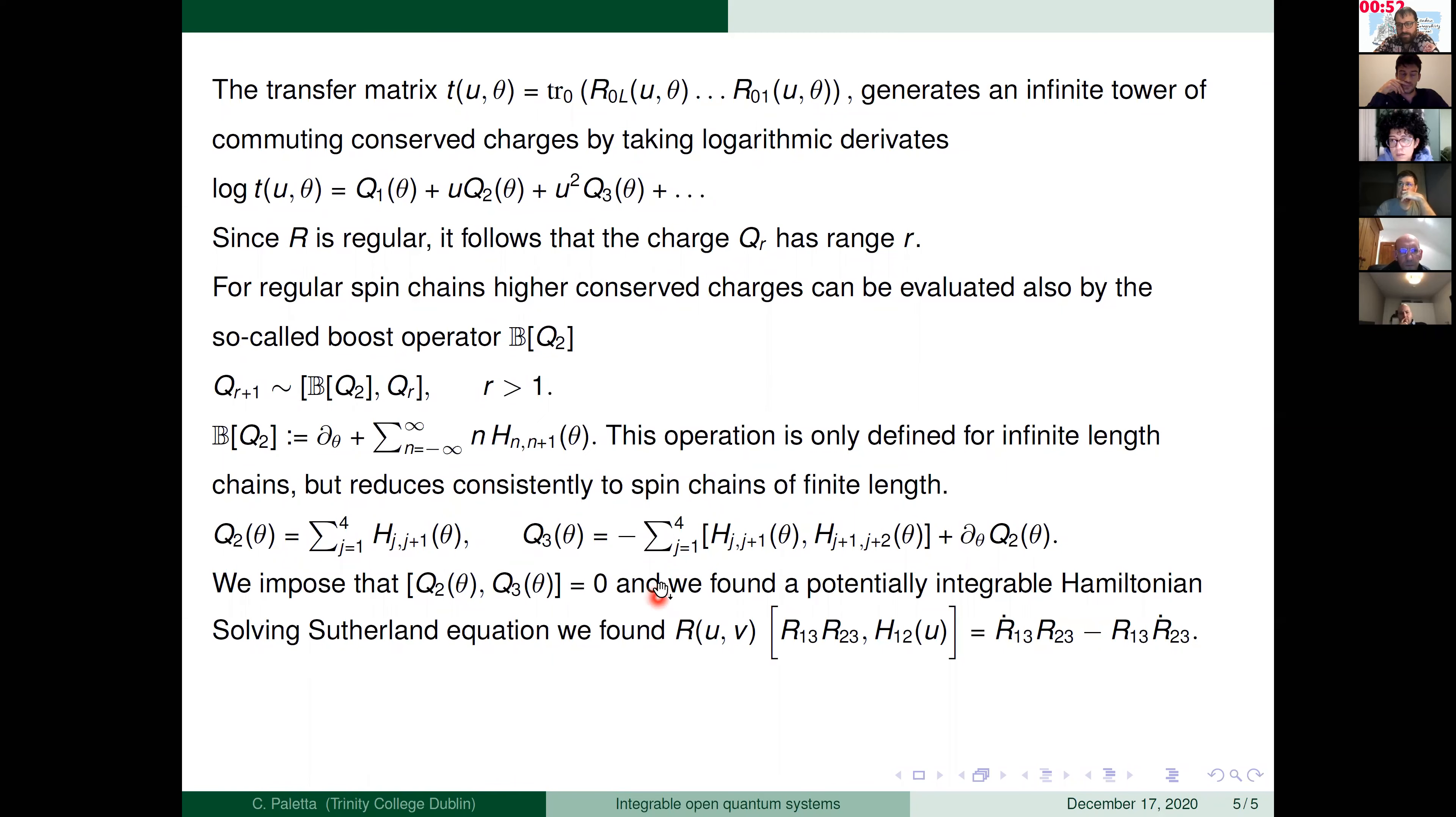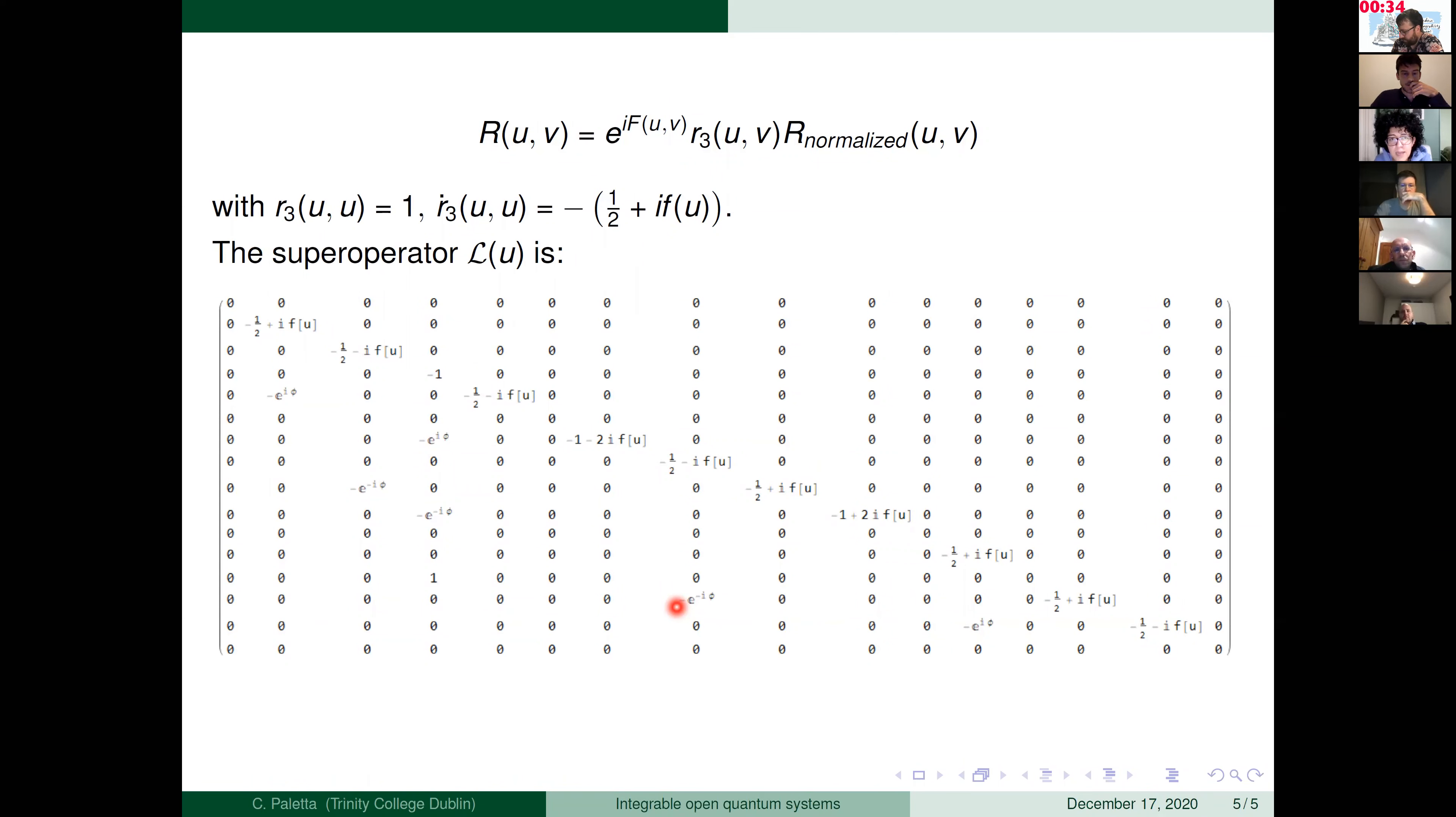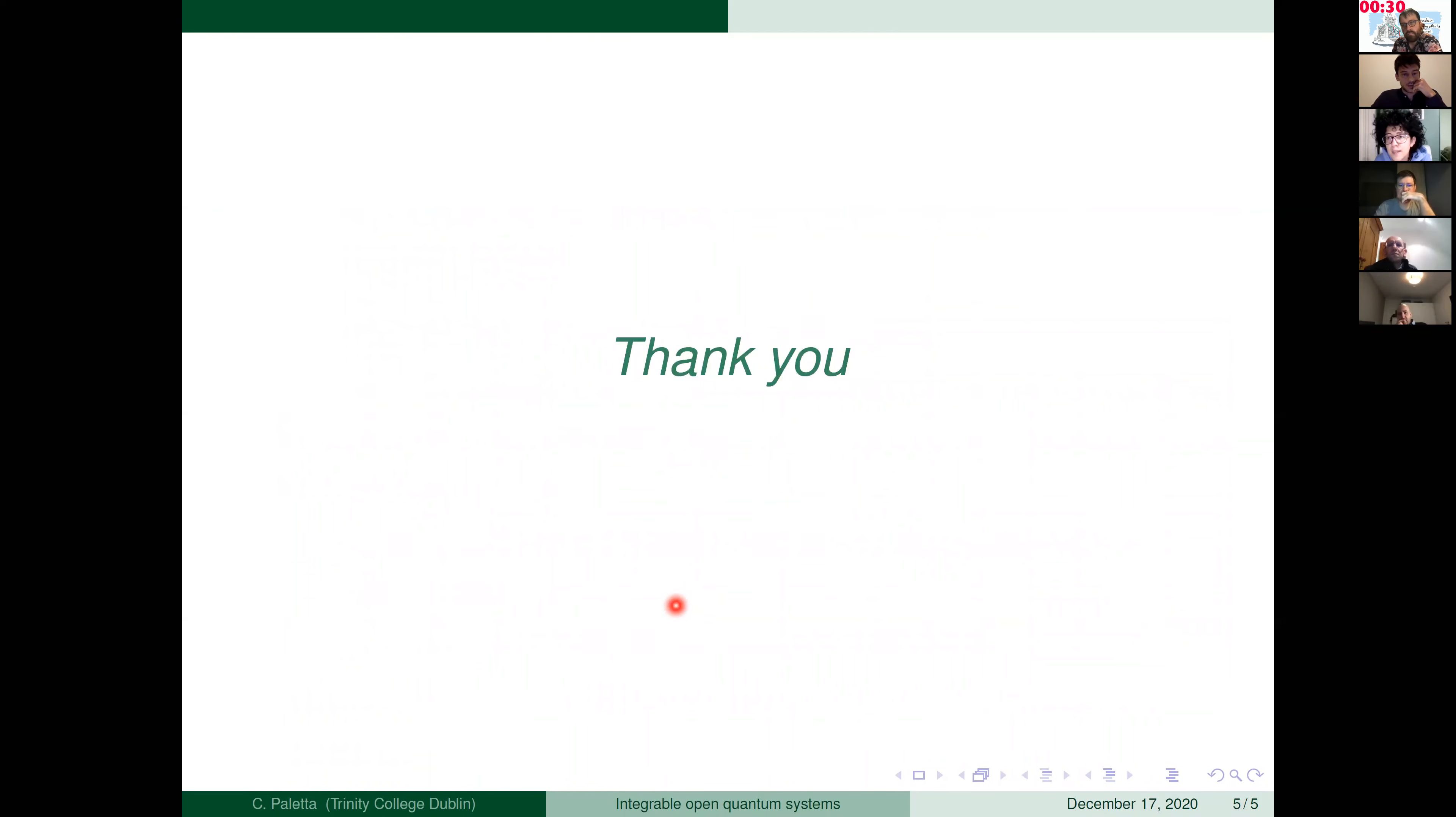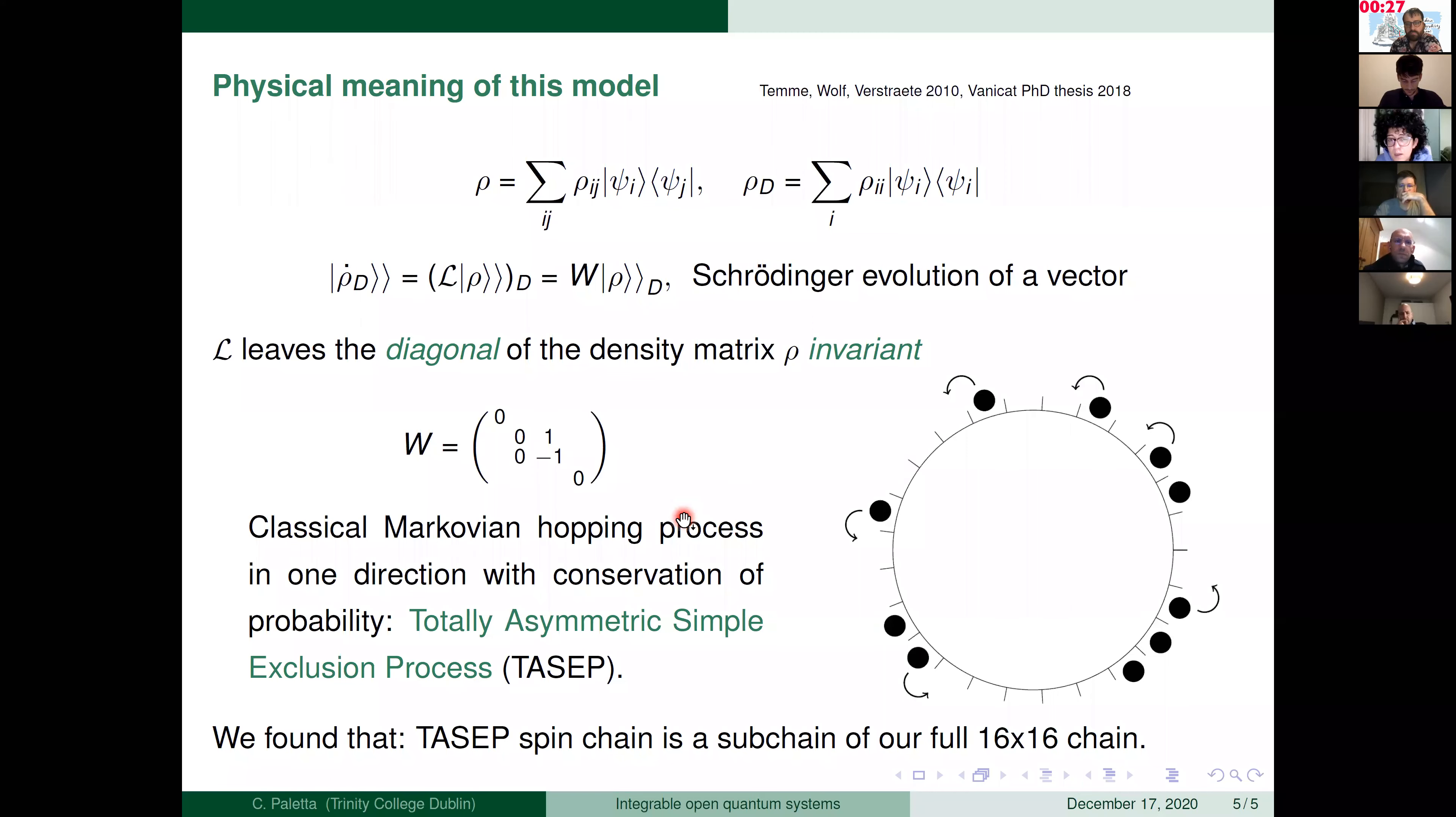Okay, I think that's very clear. May I ask something? What kind of physical quantities can you compute for this exclusion process using integrability? What are interesting quantities like the... I mean, I haven't thought much about this, but I think you can compute the non-equilibrium steady states, for example. But what is interesting here is that this is a subchain of our 16 by 16 chain. So we found an operator that is 16 by 16 and was integrable. And just focusing on the diagonal of that, we have this as a subchain of our chain. I'm not sure if this was your question.